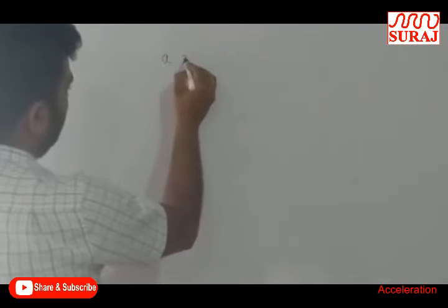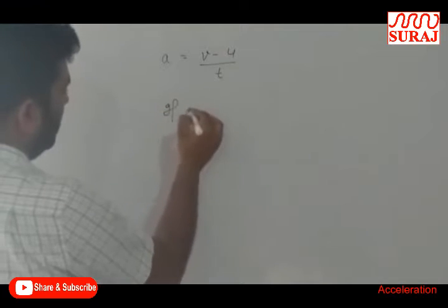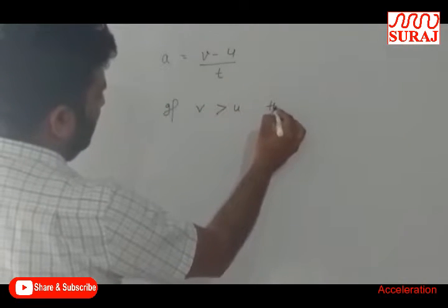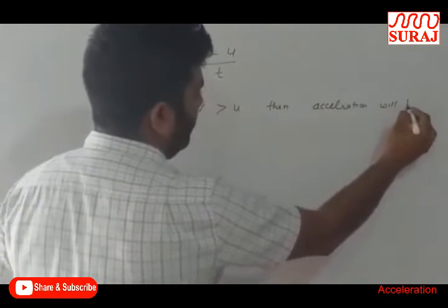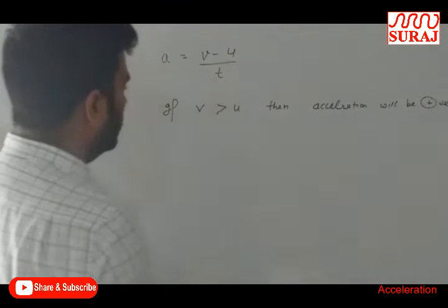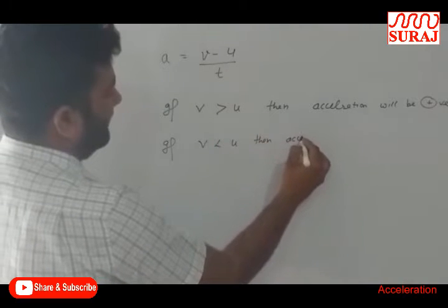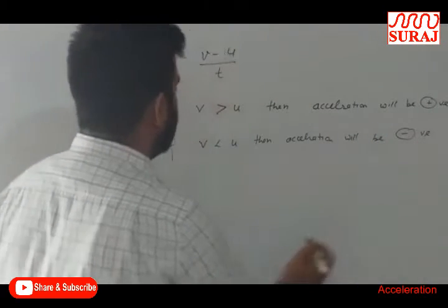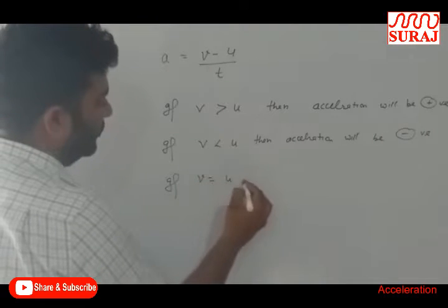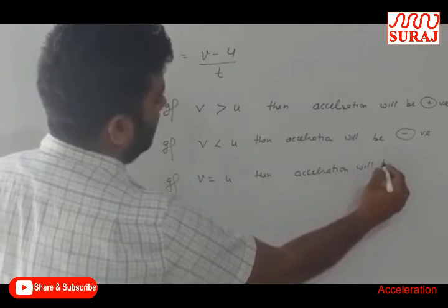How can we say that acceleration is positive or negative? We know that a = (v - u) / t. If v is greater than u, then acceleration will be positive. If v is less than u, then acceleration will be negative. If v is equal to u, then acceleration will be zero.